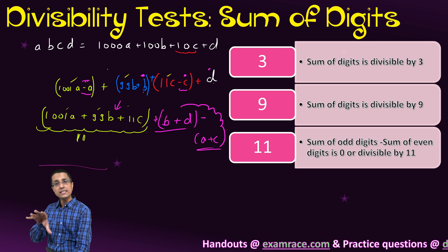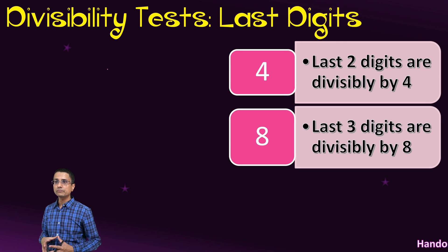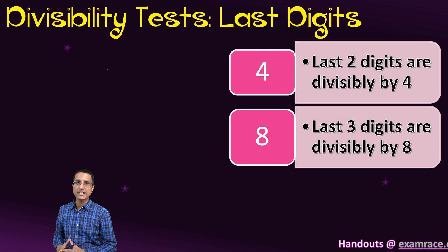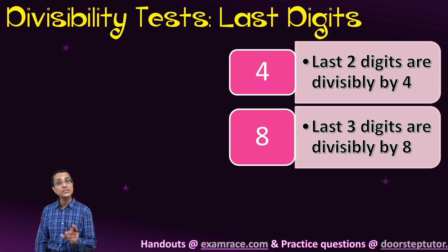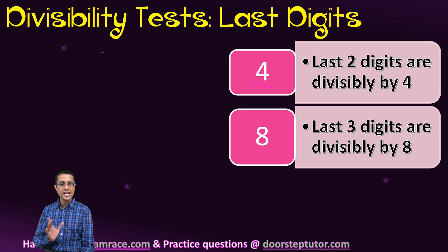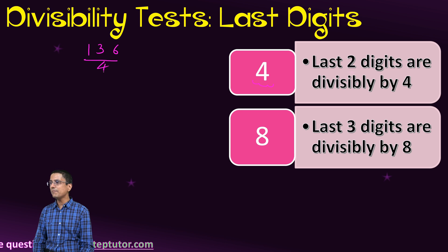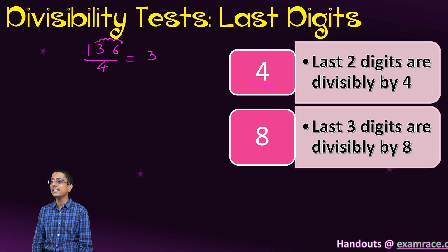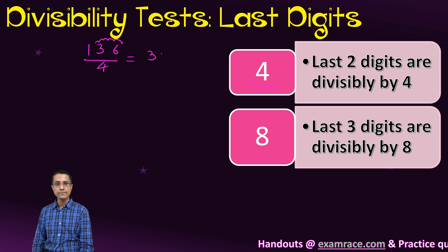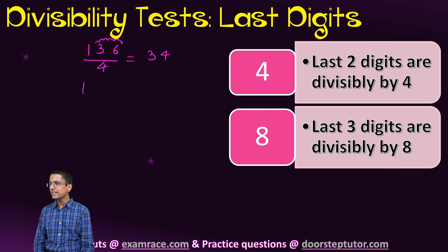I hope you got the intuition behind these divisibility tests, as it will help you remember them better. Moving on to simpler tests: for divisibility by 4, if the last two digits are divisible by 4, the entire number is divisible by 4. For example, take 136. Since 36 is divisible by 4, the number 136 is also divisible by 4, giving the answer 34.